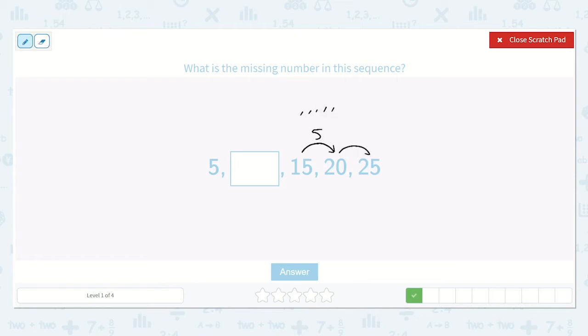Let's try this one. 20 to 25. So 20, 21, 22, 23, 24, 25. 1, 2, 3, 4, 5. So we are counting by 5, so let's add 5 to 5.